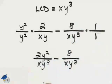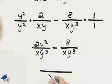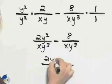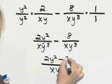Now that we have a common denominator, we should be able to subtract the numerators, so we'll have 2y squared minus 8.